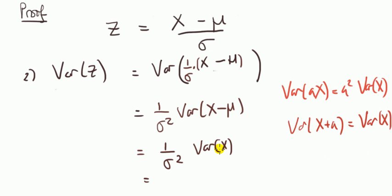So what we have is one over sigma squared times the variance of x. Now another notation for variance of x is sigma squared since we said that x is normally distributed with mean mu and variance sigma squared. That's what we know about x. So in other words, this variance of x is sigma squared. Those sigma squares cancel, we get one, and we're done.